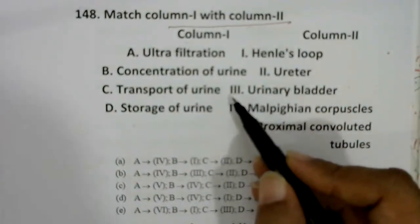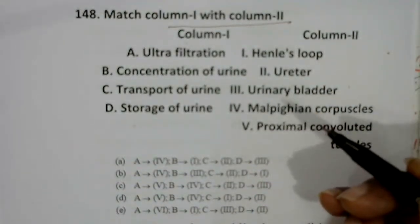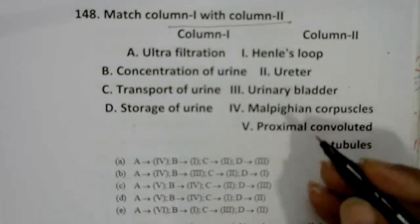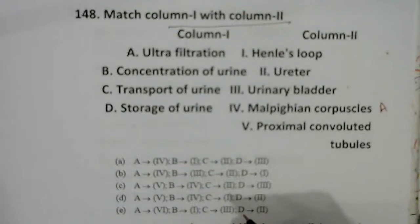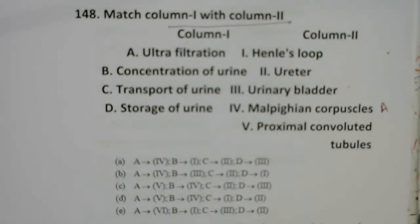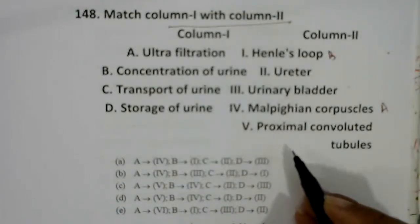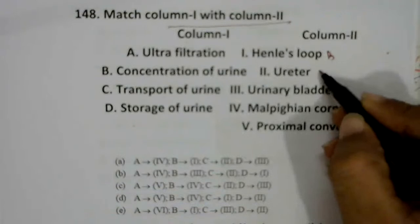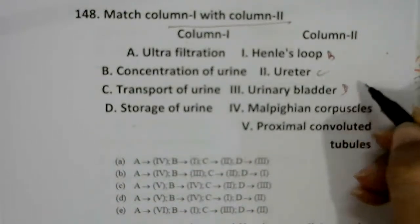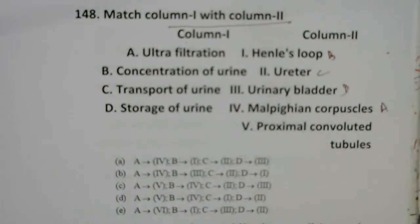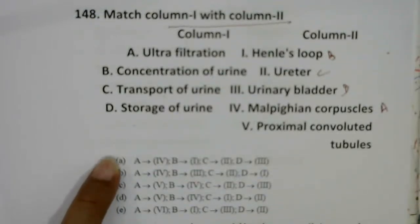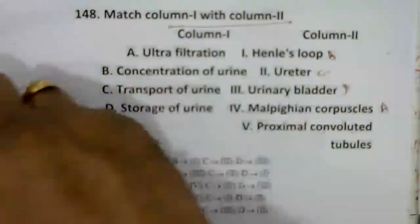Match column one with column two. Ultrafiltration occurs in the Malpighian corpuscles (Bowman's capsule and glomerular capillaries). Concentration of urine occurs in the loop of Henle. Transport of urine is carried out by the ureter. Storage of urine occurs in the urinary bladder. Answer: A4, B1, C2, D3 — option A.